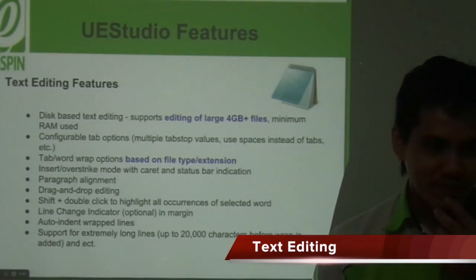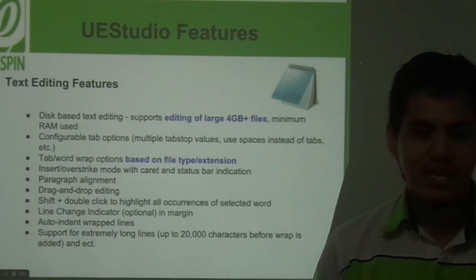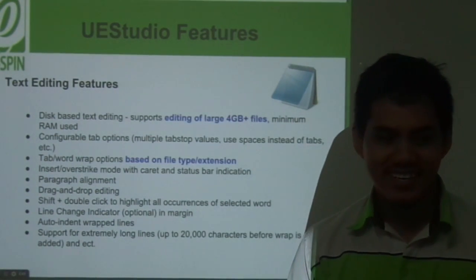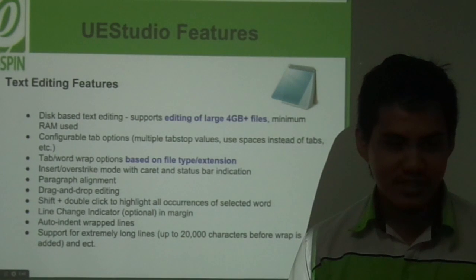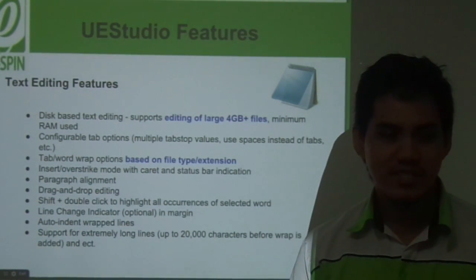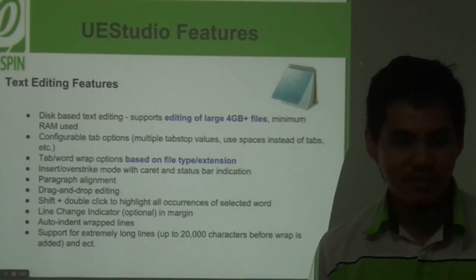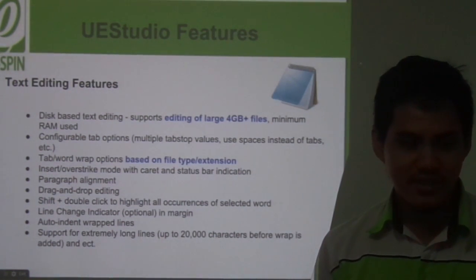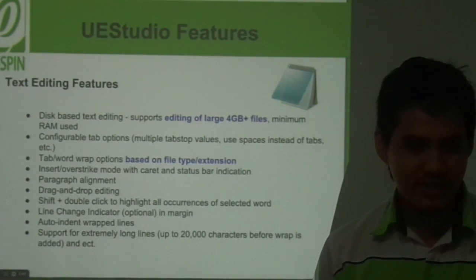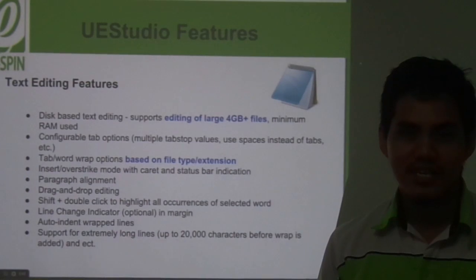Next is text editing features in UED Studio. First, disk-based text editing supports large files with minimal RAM use, configurable tab options, preserve multiple undo values, and sparse install of tabs. Next is word wrap based on file type or extension, insert or overwrite mode with caret or status bar indication, paragraph alignment, drag and drop editing, Shift+double-click to highlight all occurrences of a selected word, line change indicator, auto word wrap, and support for long lines up to 30,000 characters before wrap.